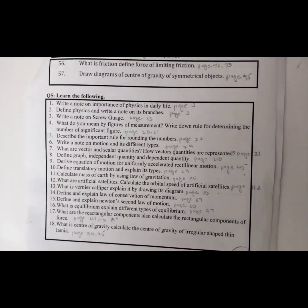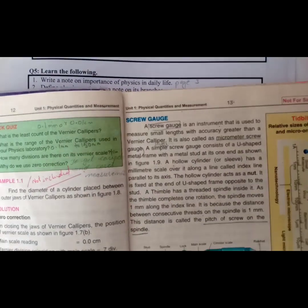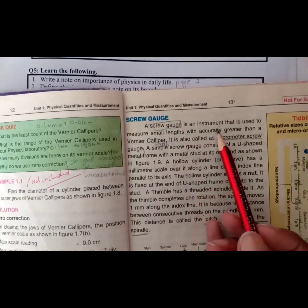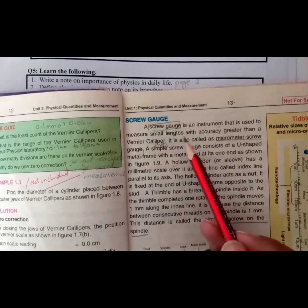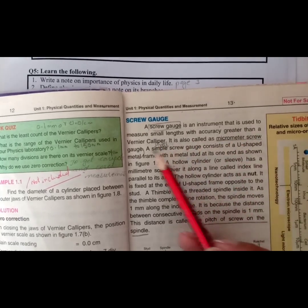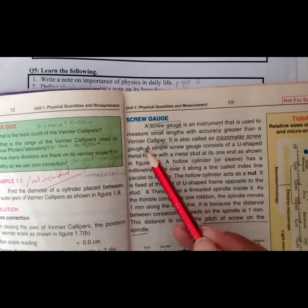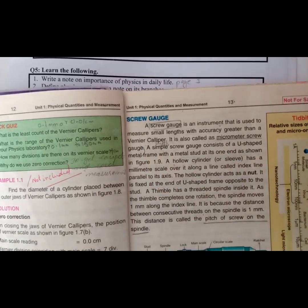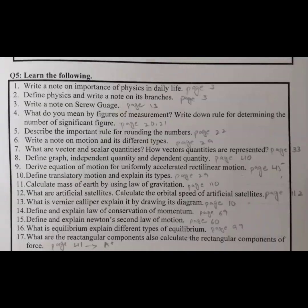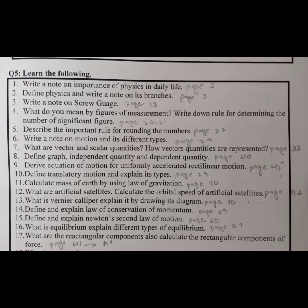Question number 3: write a note on screw gauge. Open up page number 13 of your textbook. Here we have the screw gauge. A screw gauge is an instrument that is used to measure small lengths with accuracy greater than a vernier caliper. It is also called micrometer screw gauge.